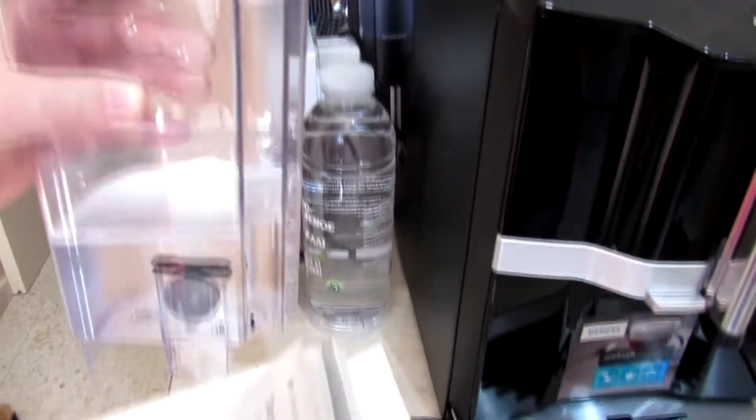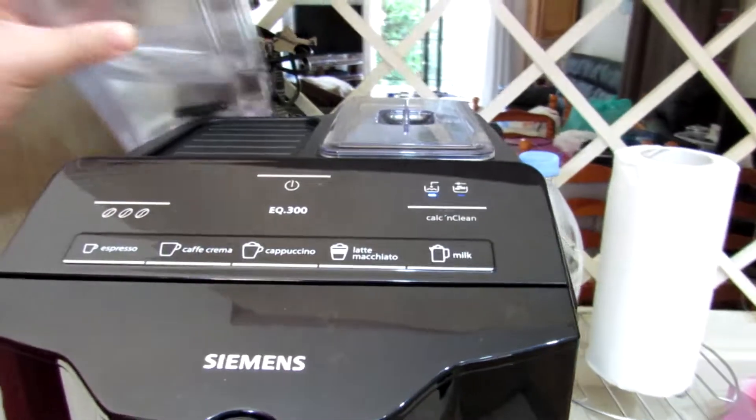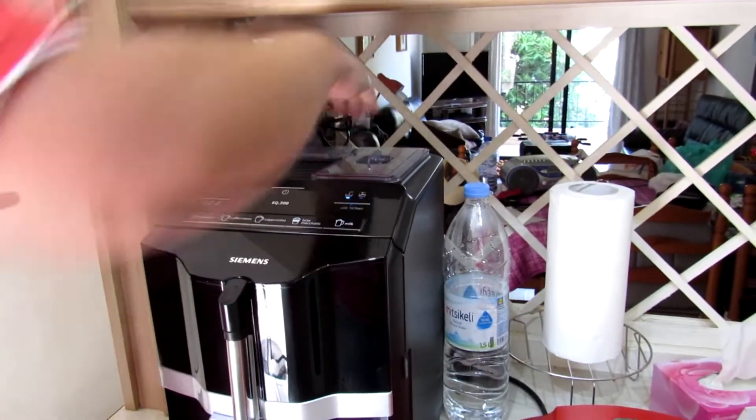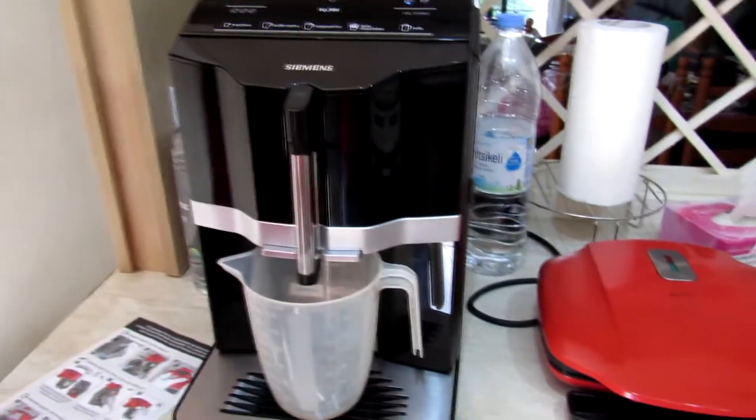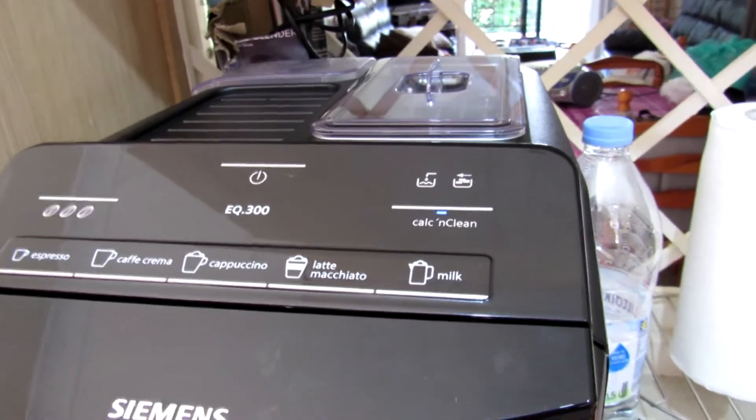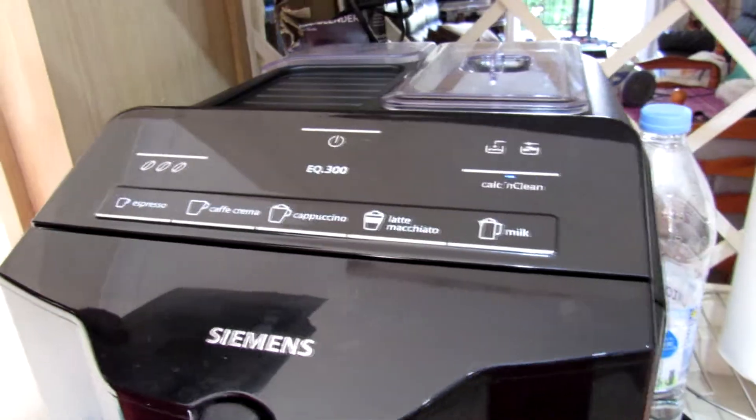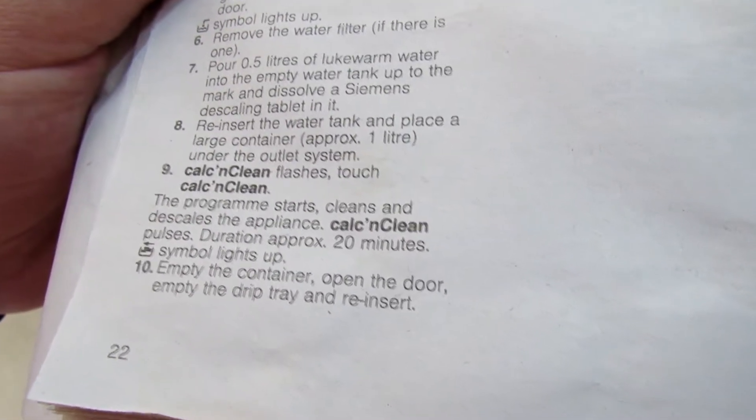Stage 8: Reinsert the water tank and place a large container, approximately one liter under the outlet system. Stage 9: Calc and clean flashes, touch calc and clean. The program starts, cleans and descales the appliance. Calc and clean pulses, the appliance approximately 20 minutes.